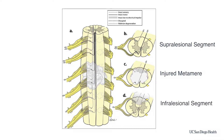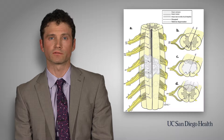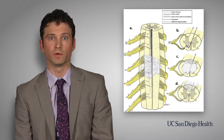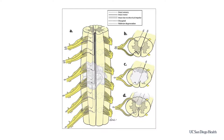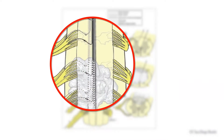The third segment is the infralesional segment. This region generally retains the integrity of its lower motor neurons but is disconnected from cortical control — potential recipients. Importantly, there is not a clean transition between these regions. For an effective reconstructive plan we need to recognize which of these three conditions affects the muscles of interest, i.e. how much upper or lower motor neuron damage has occurred in the donor and recipient nerves. There is a high chance of significant lower motor neuron injury in muscles innervated by that border zone between the supralesional segment and the injured metamere.